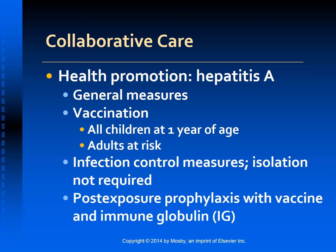Immunoglobulin provides temporary one to two months passive immunity and is effective for preventing hepatitis A if given within two weeks after exposure. It is recommended for persons without anti-HAV antibodies who are exposed through close contact with HAV-positive persons or foodborne exposure. Because patients with HAV are most infectious during the pre-icteric phase, those exposed through household contact or foodborne outbreaks should receive immunoglobulin. It may modify the illness to a subclinical infection. When hepatitis A occurs in a food handler, immunoglobulin should be administered to all other food handlers at the establishment. Persons who received a dose of hepatitis A vaccine more than one month previously or who have lab-confirmed HAV infection do not require immunoglobulin.